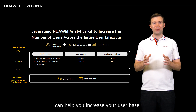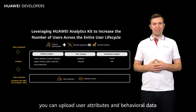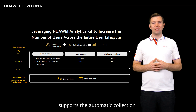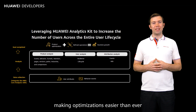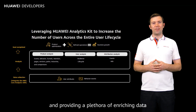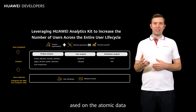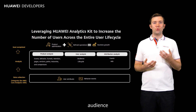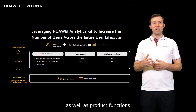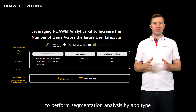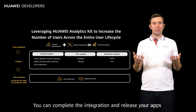Now let's review how Huawei Analytics Kit can help you increase your user base across the entire lifecycle. Once you integrate the HMS Core Analytics SDK, you can upload user attributes and behavioral data. Huawei Analytics Kit supports automatic collection of 11 user attributes and 27 events, as well as customized user attributes and 500 customized events, making optimizations easier than ever and providing a plethora of enriching data for targeted operations. Furthermore, it provides abundant analysis models based on atomic data — such as events, behavior, funnels, audience, lifecycle, and attribution — helping you get familiar with user growth and user behavior trends, as well as product functions. The filter utilizes these models to perform segmentation analysis by app type, user attribute, and audience. You can complete the integration and release your apps with just a few hours of work.